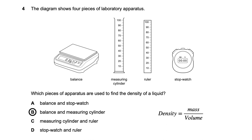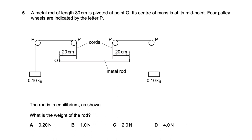Question five: a metal rod of length 80 centimeters is pivoted at point O, with its center of mass at its midpoint, 40 centimeters from the end. Pulley wheels are connected and the rod is in equilibrium. We can solve this in two methods. The two masses are each pulled by gravity and, via the pulleys, this weight force is converted upward.